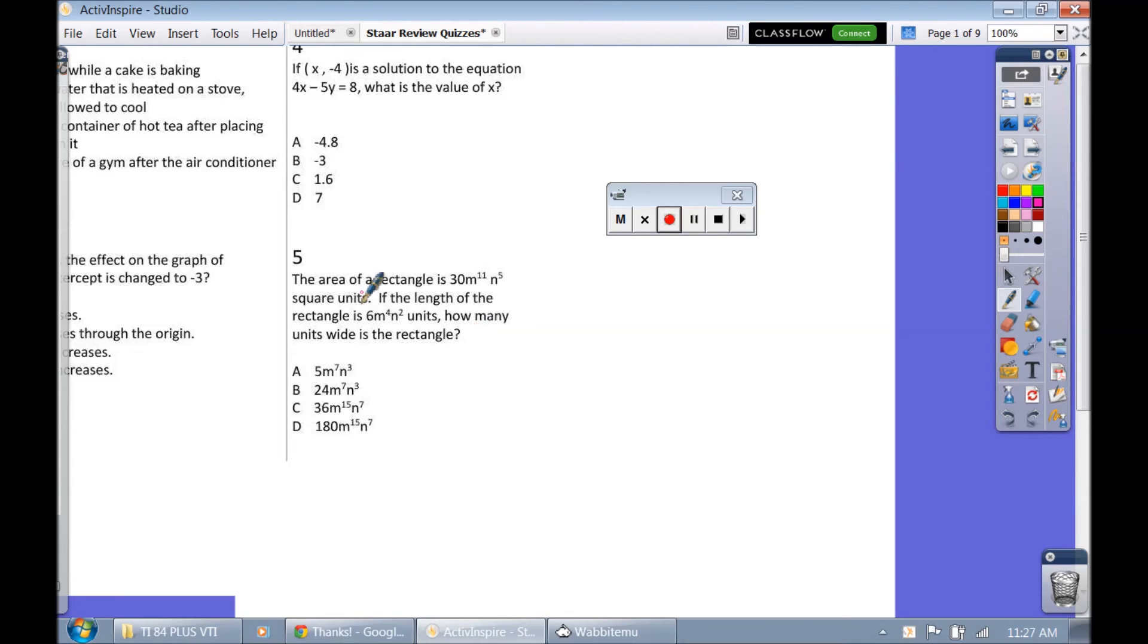Alrighty, here we go. We are on question 5. The area of a rectangle. So another rectangle problem. Draw a rectangle. This time they're telling you that area, which is the end, we'll call it the inside, is 30m to the 11th n to the 5th. If the rectangle has a length of 6m to the 4th n squared, so I'll put that on the outside, how many units wide is the rectangle? So our answer choices are going to be the missing side length.